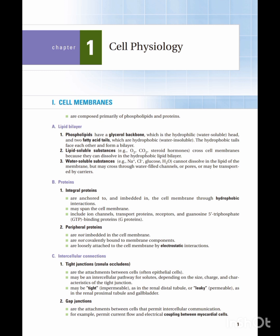Gap junctions are also attachments between cells, but they permit intercellular communication. An important feature is that they are a speciality of myocardial cells. Gap junctions allow the flow of current — specifically, action potentials — and permit electrical coupling between myocardial cells. So remember: gap junctions are present in myocardial cells.